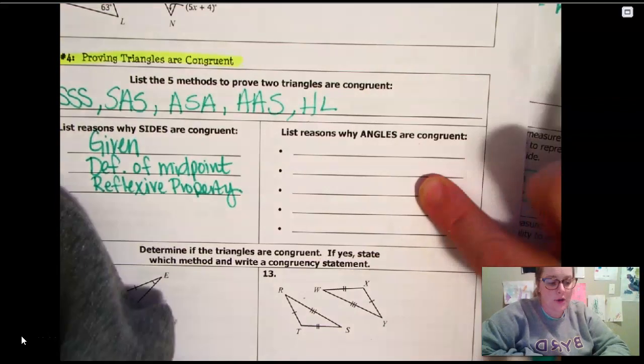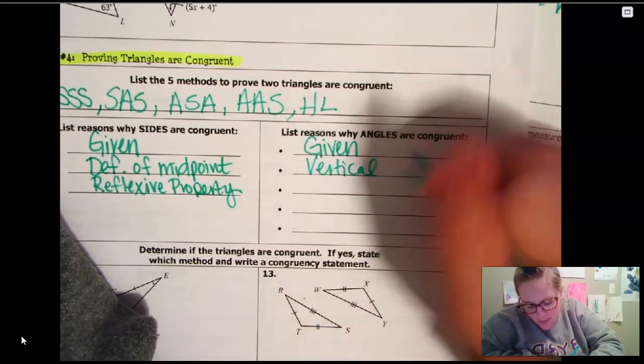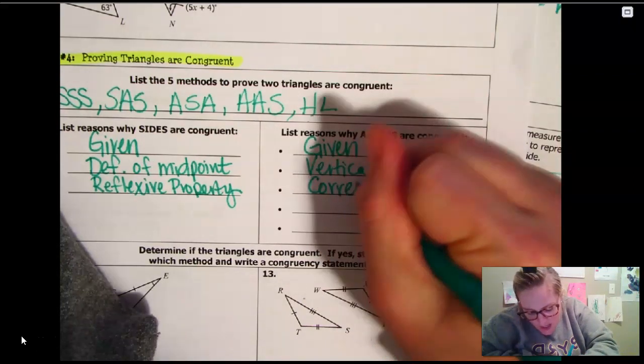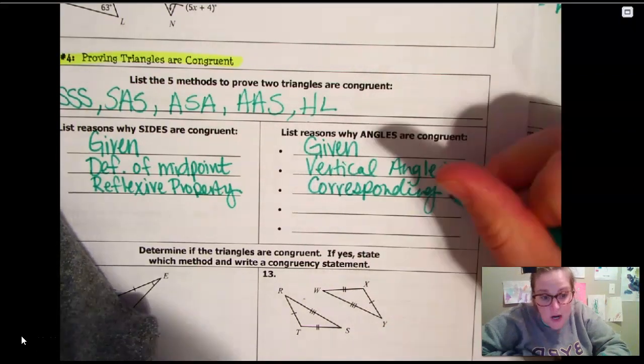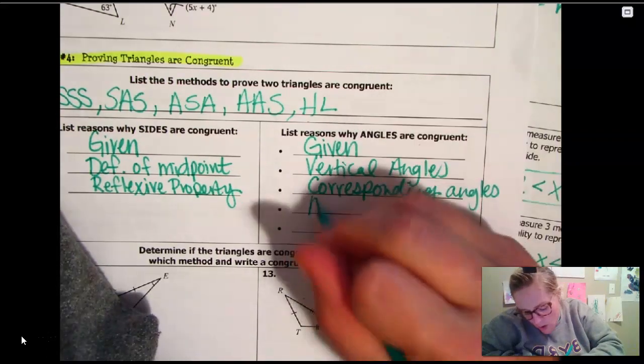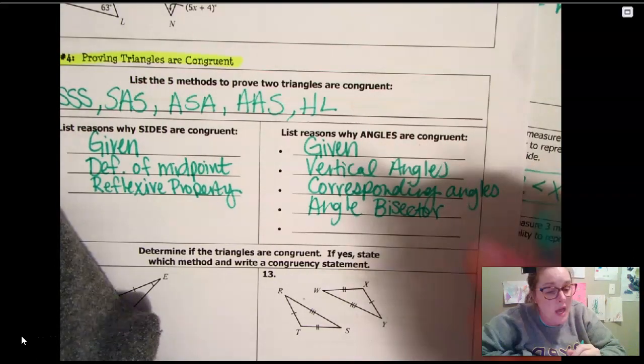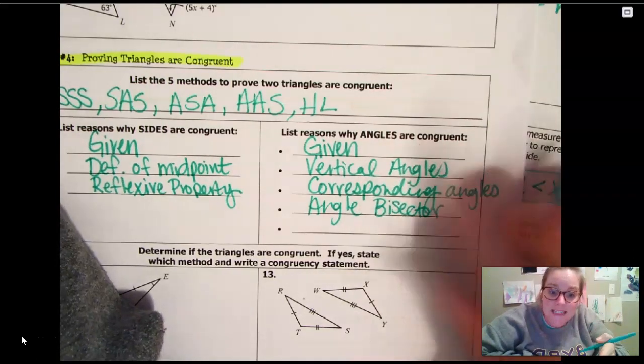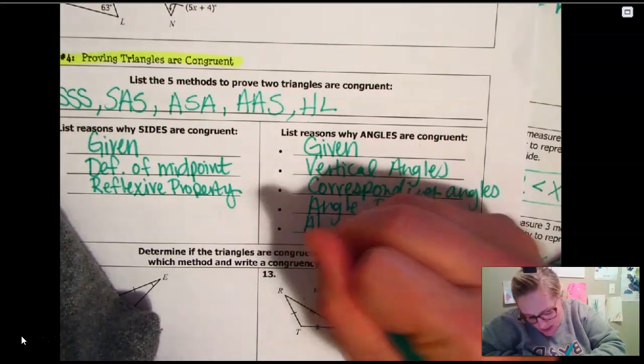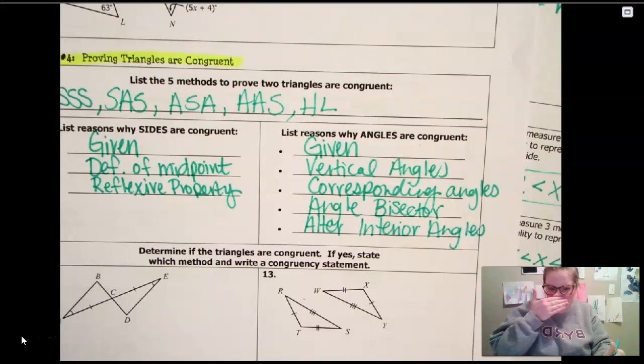Now, reasons why the angles are congruent. Again, it could be given information. It could be that they are vertical angles. Remember that vertical angles are the ones that touch noses. Those are vertical angles. If they're corresponding, if you see that the sides are parallel, then that's a good indication that you are going to have some type of corresponding angles. Or you could have angle bisector. If that angle has been bisected in half, then you know that it's been divided into two equal parts so that they are congruent. And then the alternate interior angles. And again, that one is going to be indicated with having those parallel lines.